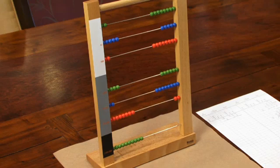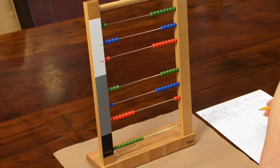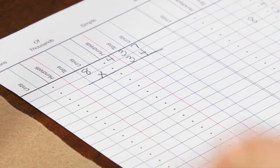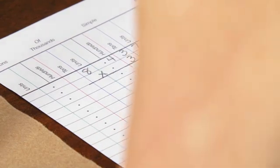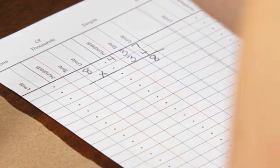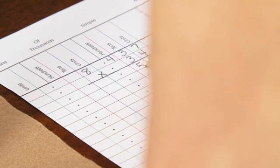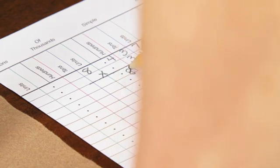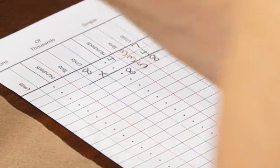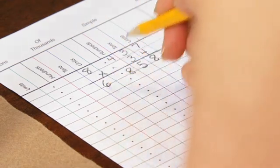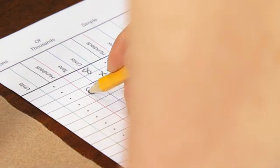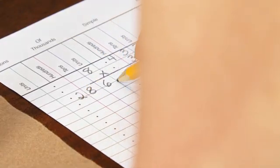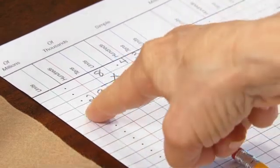And when I record it on the paper, I'll record starting with the units place so I can be sure everything is in its place. Starting with the units place, I'm going to record 8 in the units place, 5 in the tens place, 8 hundreds, 6 thousands, 8 tens thousands, 2 hundreds thousands. And I'll put in the comma to make it easier to read the answer on the paper.